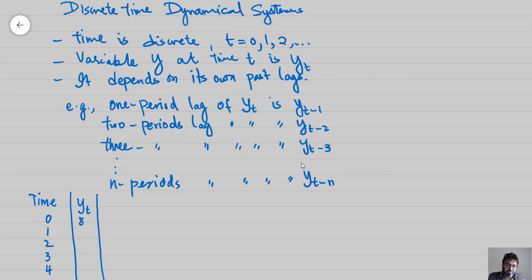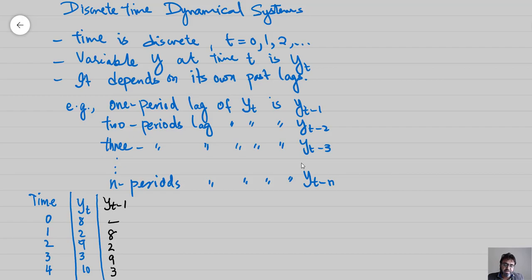Consider an example with 5 time periods from 0 to 5, where the variable takes values 8, 9, 3, 10, and so on. To generate the first lag y_{t-1}: there is no information at period minus 1, so there is no lag at t=0. At t=1, the lag value becomes the value from period 0, which is 8. You trim one value from the bottom and slide the vector down to obtain the one-period lag. For a two-period lag, trim one more value and slide again.